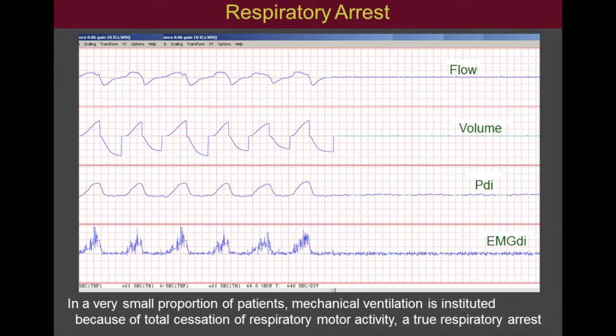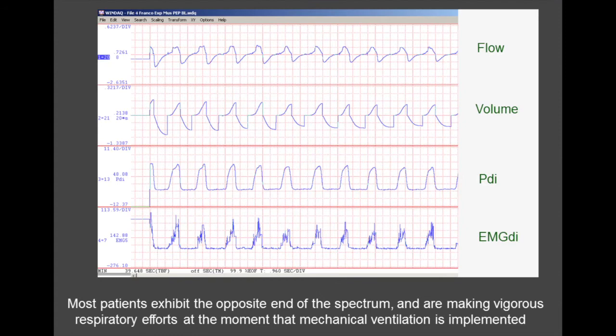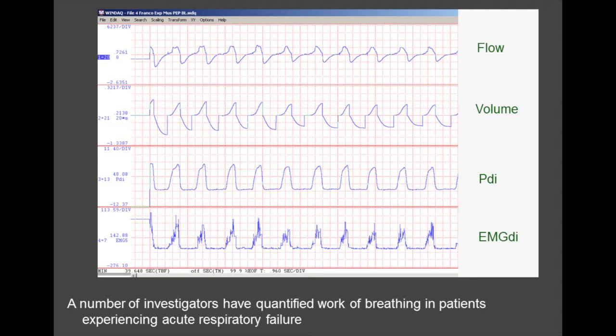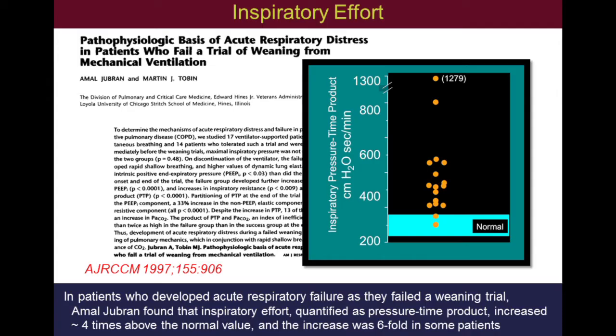In a very small proportion of patients, mechanical ventilation is instituted because of total cessation of respiratory motor activity — that is, a pure respiratory arrest. Most patients exhibit the opposite end of the spectrum and are making vigorous respiratory efforts at the moment mechanical ventilation is implemented. A number of investigators have quantified work of breathing in patients experiencing acute respiratory failure. In patients who developed acute respiratory failure and failed a weaning trial, Malbrain found that respiratory effort, quantified as pressure-time product, increased about four times above the normal value, and the increase was six-fold in some patients.